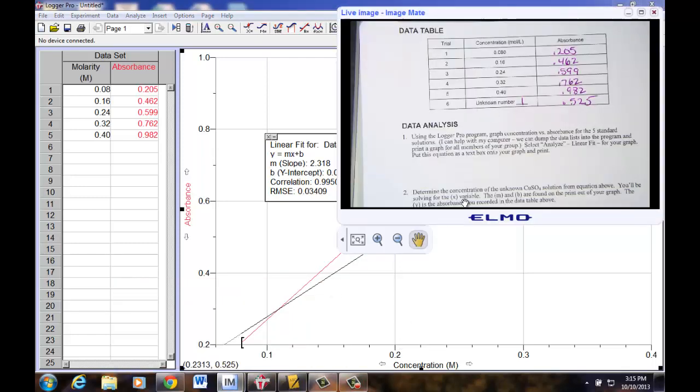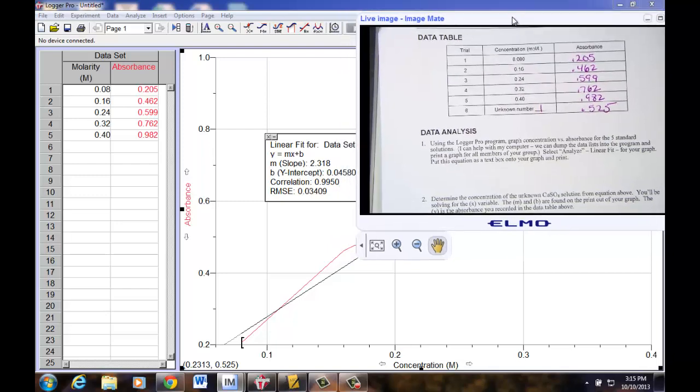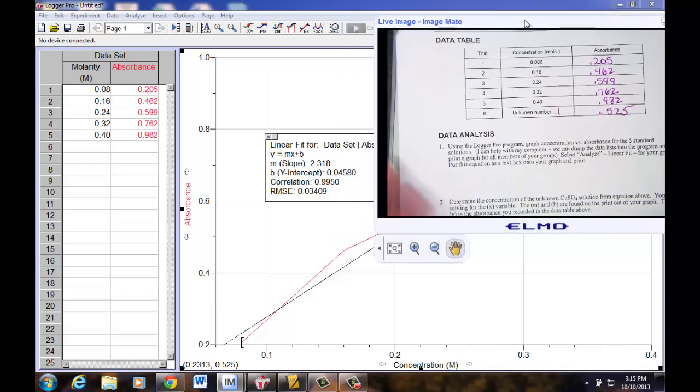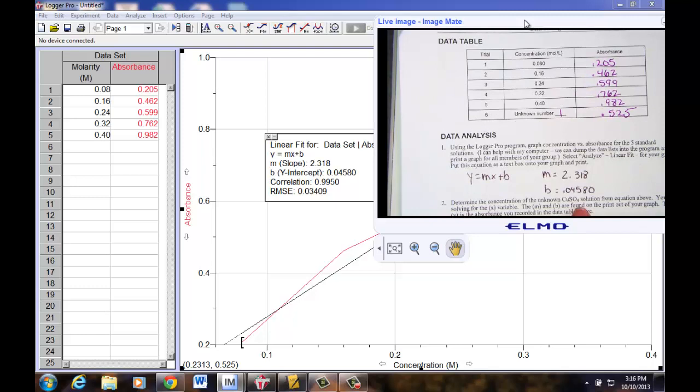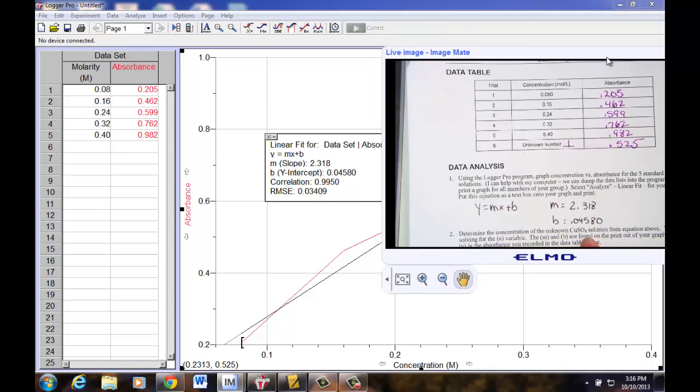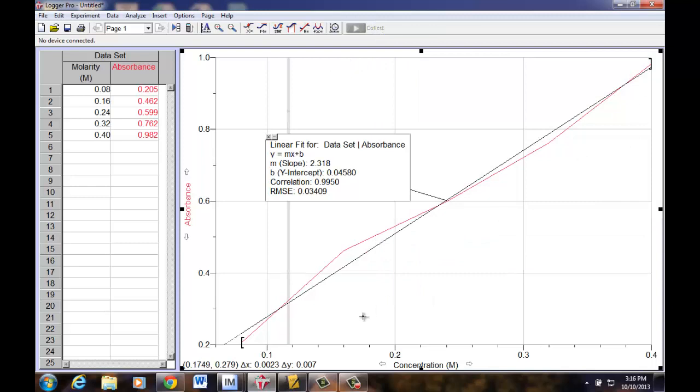So what we'll need to do is record on our page under Data Analysis 1 the values for the Y equals MX plus B slope. So let's suppose, can I fit these both on? I want to simply record for Y equals MX plus B my M value, which is the slope of the line, 2.318, and the Y intercept value of 0.04580. I'll just record that right here on my data table.